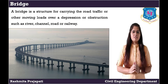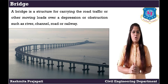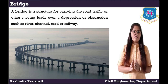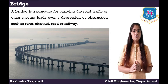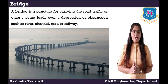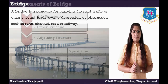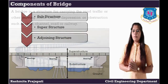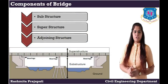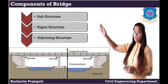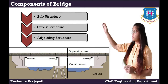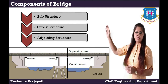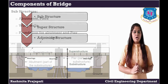A bridge is a structure for carrying the road traffic or other moving loads over a depression or obstruction such as a river, channel, road or railway. The main three components of a bridge are substructure, superstructure and adjoining structure.